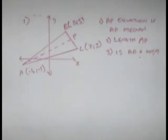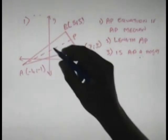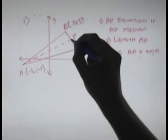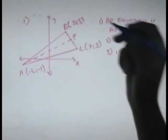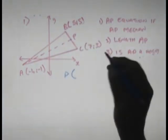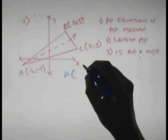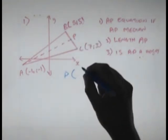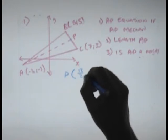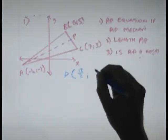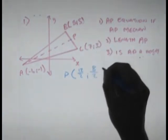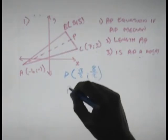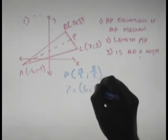The first one was: determine the equation of AP if AP is a median. If AP is a median of this triangle, it means that P is the midpoint of BC. That means that the coordinates of P are given by (x2 + x1) / 2, which is (7 + 5) / 2 = 12 / 2 = 6, and (3 + 5) / 2 = 8 / 2 = 4. So the coordinates of P are (6, 4).